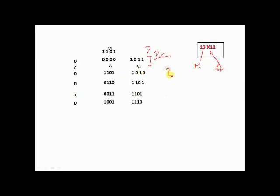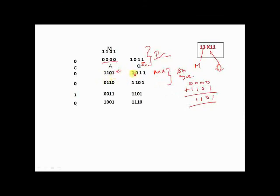In the first cycle, depending on the value of q0, it has to decide whether to add or no add. Since q0 is 1, it indicates add. So the content of A, which is 0000, is added with the content of M, which is 1101, giving 1101, and it is placed back in register A. After adding, there is a shift right operation — one bit shifts to the right, so we get 0110 in A with carry fed as 0. That completes the first cycle.